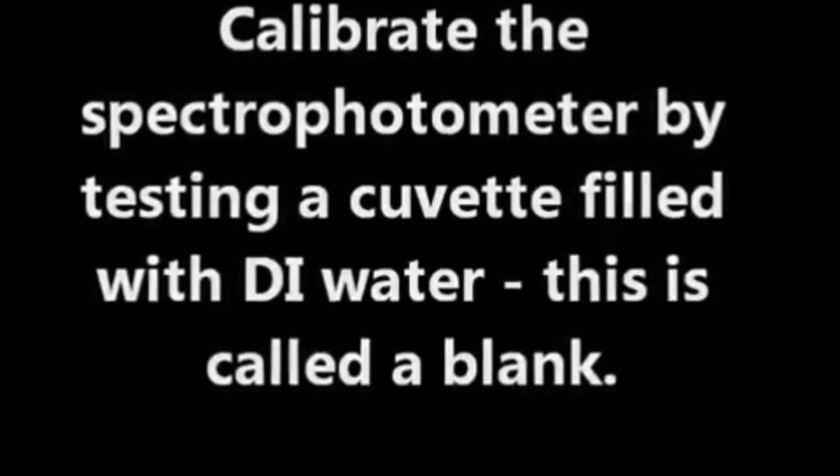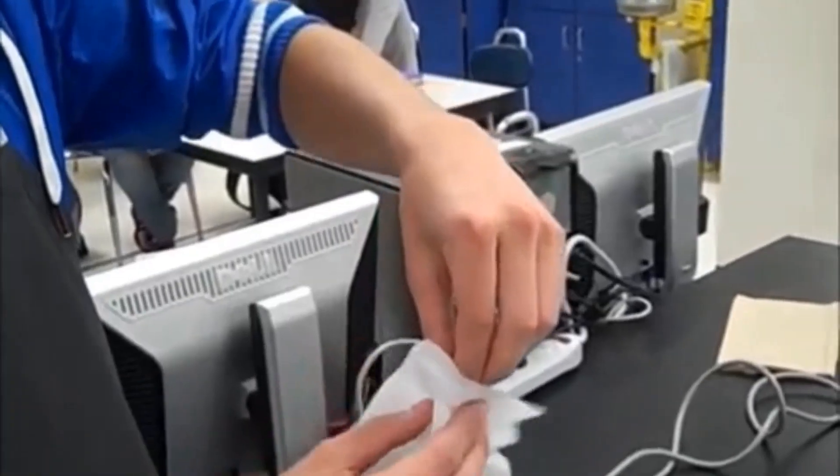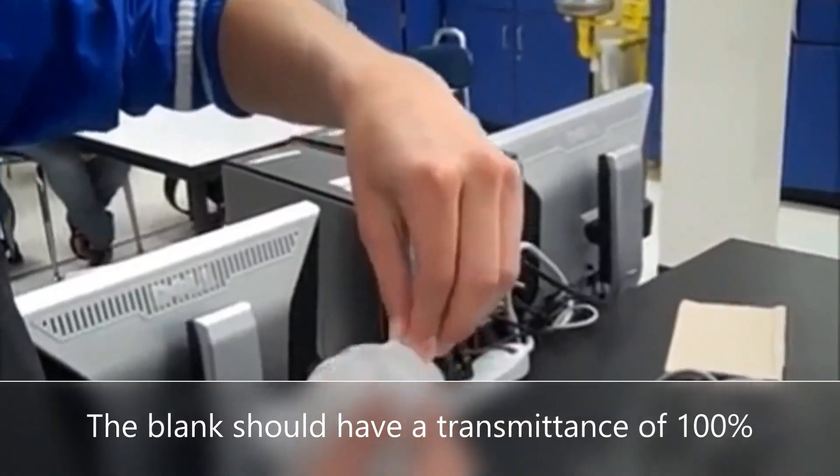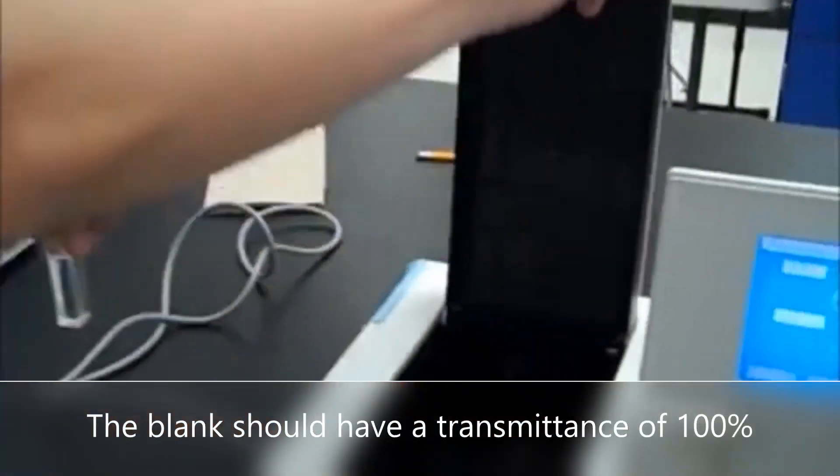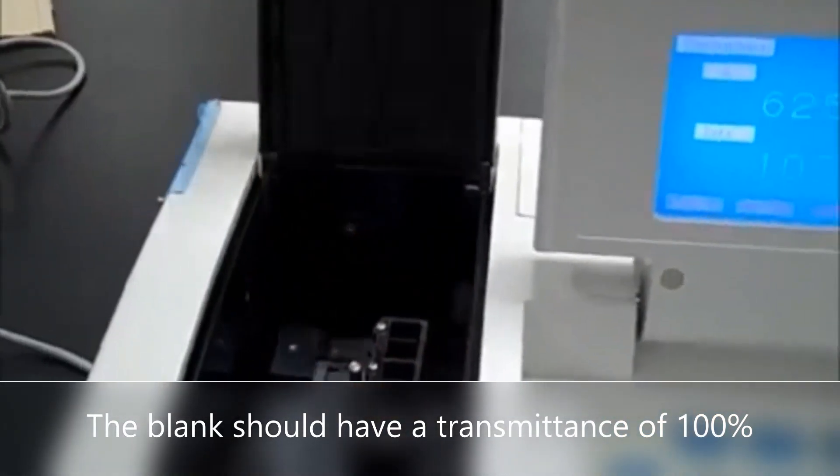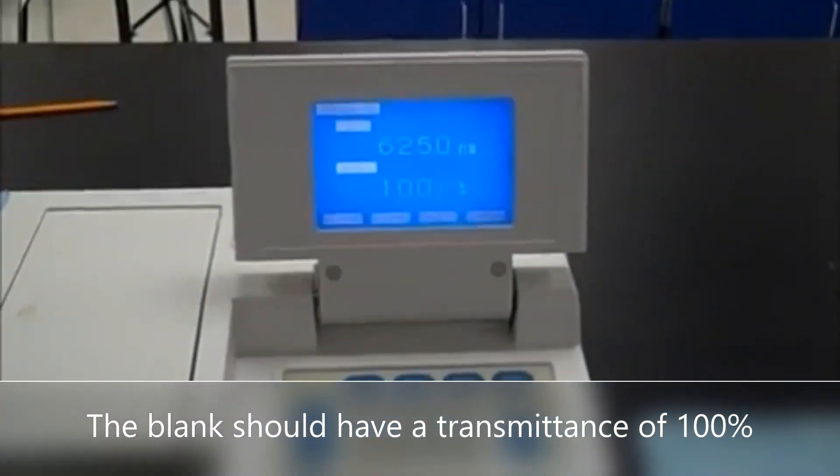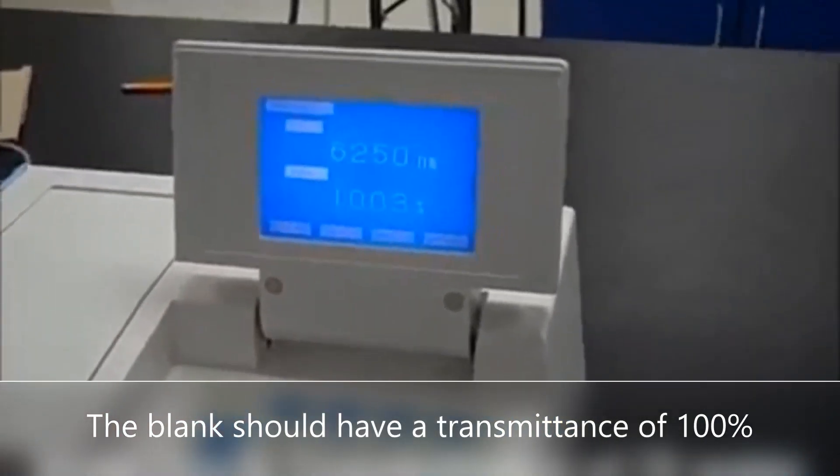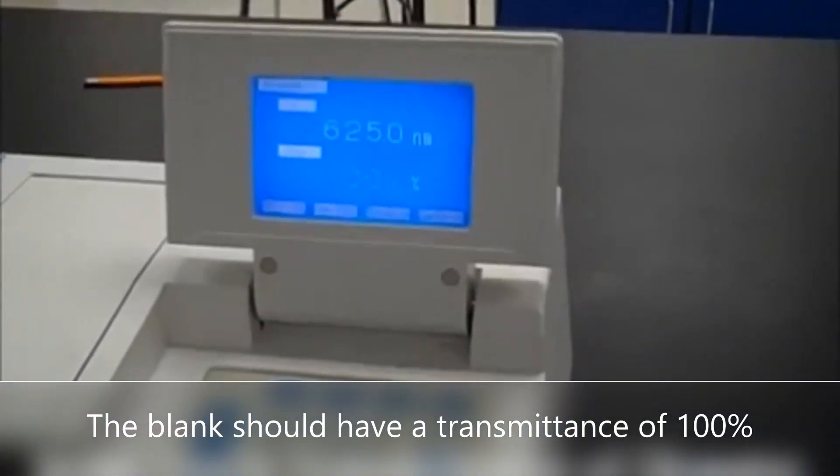The spectrophotometer is calibrated using a blank. This is a cuvette filled with pure water. The blank should have a transmittance of 100 percent because it doesn't contain any of the compound which will absorb any of the light. For this experiment the light is set at a wavelength of 625 nanometers.